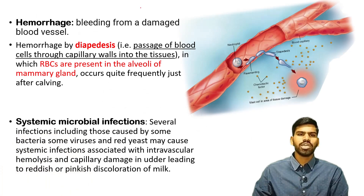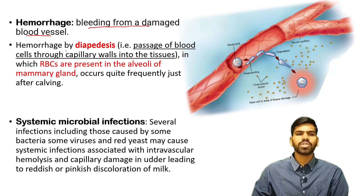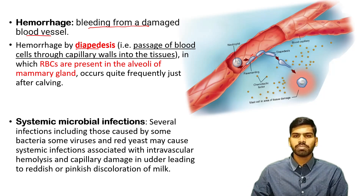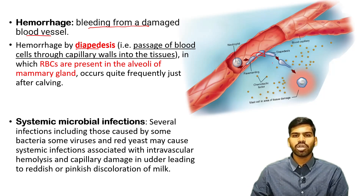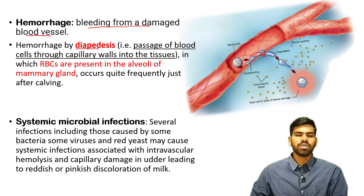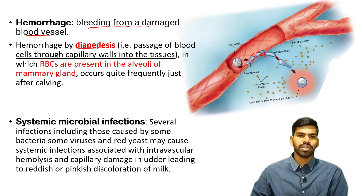What is Hemorrhage? Hemorrhage is nothing but bleeding from damaged blood vessels. Hemorrhage by Diapedesis — Diapedesis is the passage of blood through capillary walls into adjoining tissues. You can see in this photo the blood being passed from capillary tubes into adjoining tissues. Similarly, Hemorrhage by Diapedesis in which RBCs are present in the alveoli of the mammary gland occurs quite frequently just after calving.